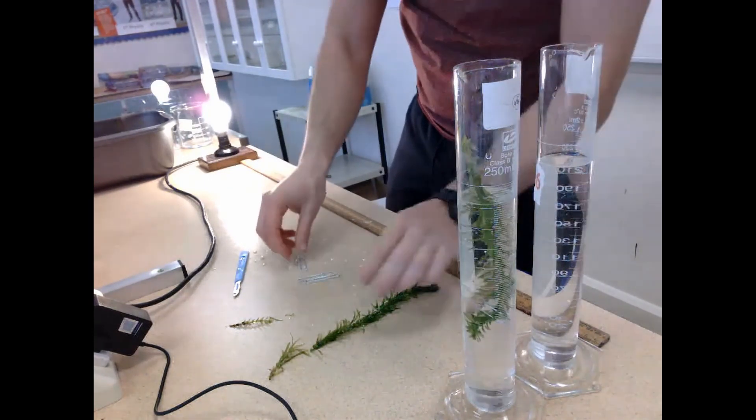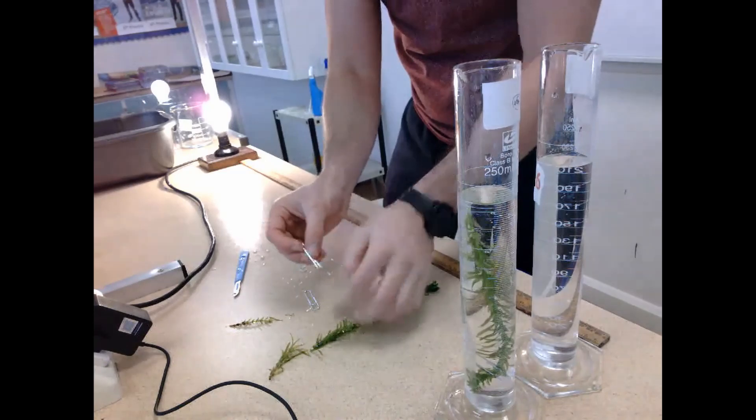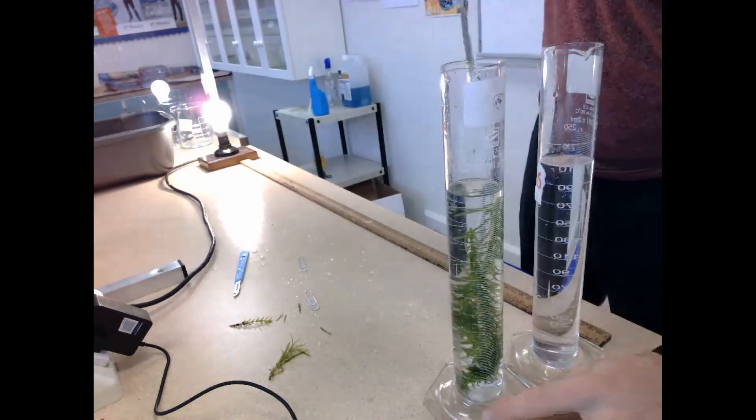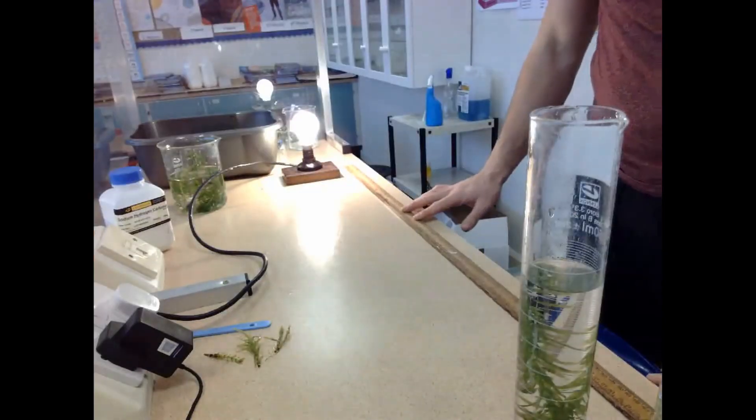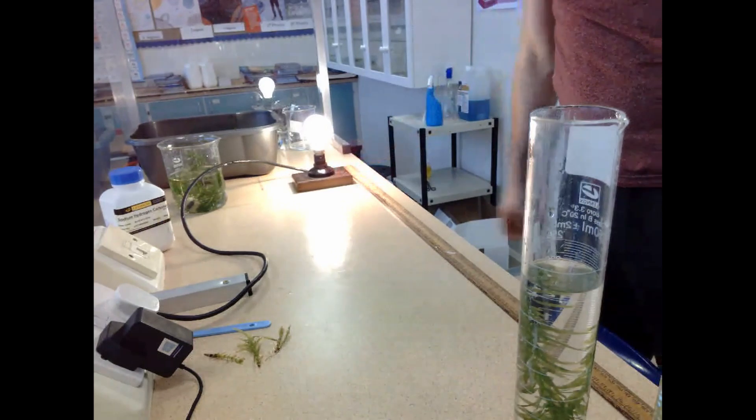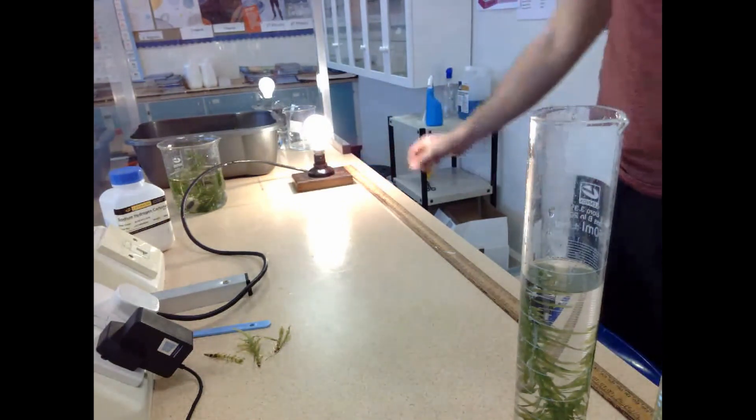To begin with, the light bulb is left a full meter away from the graduated cylinders, and what you're going to see is there is going to be very little production of bubbles. And this is because the light intensity isn't going to be that great.